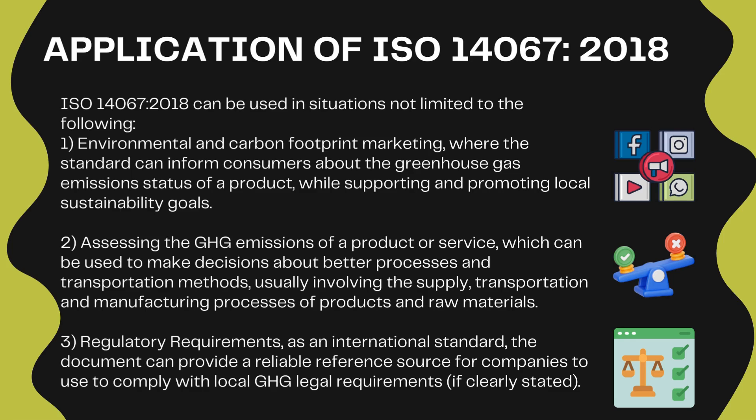Application of ISO 14067:2018. ISO 14067:2018 can be used in situations not limited to the following. 1. Environmental and carbon footprint marketing, where the standard can inform consumers about the greenhouse gas emission status of a product, while supporting and promoting local sustainability goals. 2. Assessing the GHG emissions of a product or service, which can be used to make decisions about better processes and transportation methods, usually involving the supply, transportation, and manufacturing processes of products and raw materials. 3. Regulatory requirements: as an international standard, the document can provide a reliable reference source for companies to comply with local GHG legal requirements, if clearly stated.